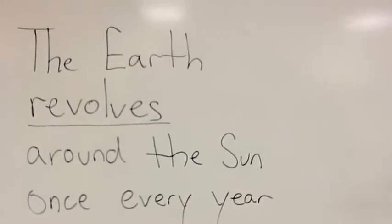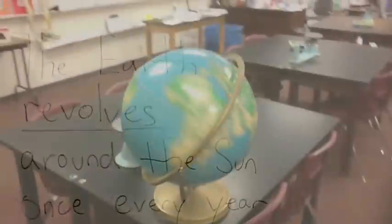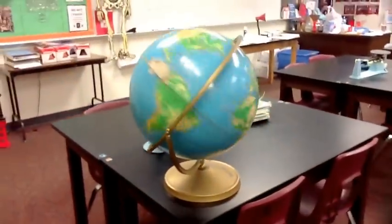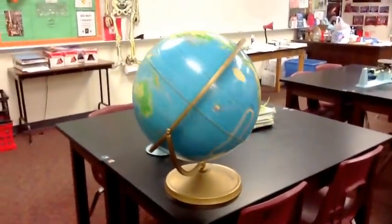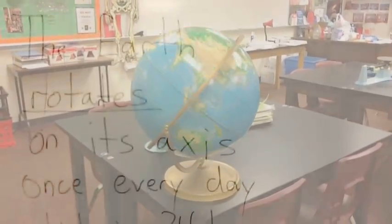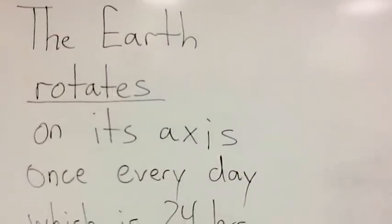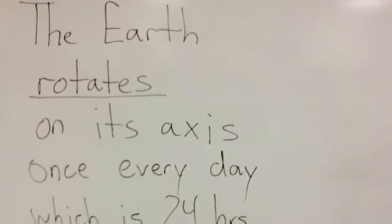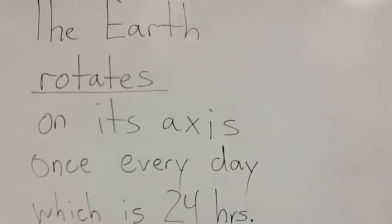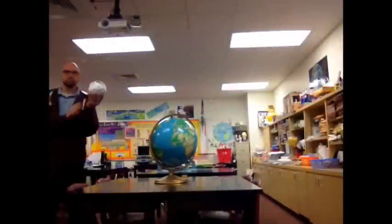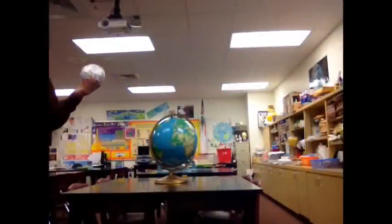The Earth rotates on its axis once every day, which is 24 hours, and causes day and night.